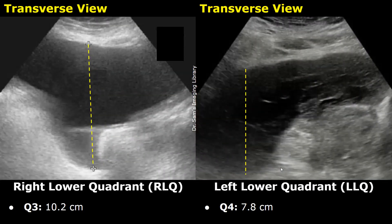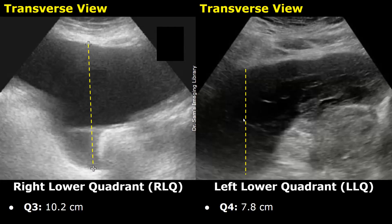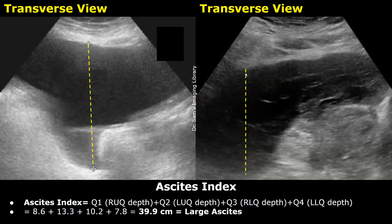This image shows the third quadrant, Q3, the right lower quadrant in the transverse plane. The maximum depth here is 10.2 centimeters. The fourth quadrant, Q4, is the left lower quadrant, and it measures 7.8 centimeters. Now we have four measurements, one from each quadrant, so we will add all these values: 8.6 plus 13.3 plus 10.2 plus 7.8, which equals 39.9 centimeters. Since this value is greater than 20, it is classified as large Ascites.